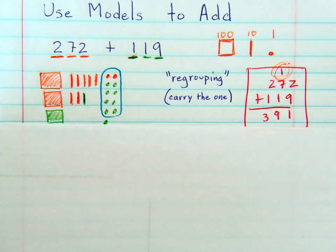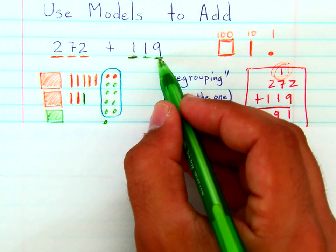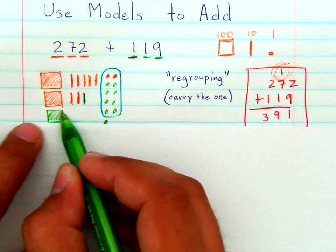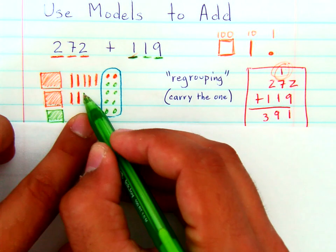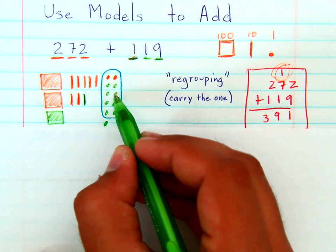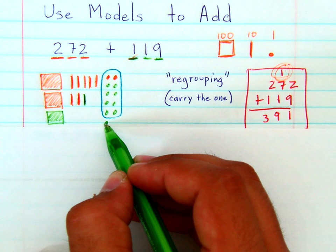Now when you're looking at 119, you would add 1 hundred square, 1 ten line, and 9 single units. 1, 2, 3, 4, 5, 6, 7, 8, 9 dots.